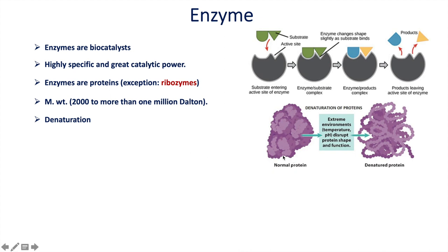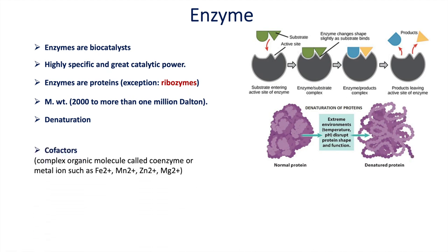This process of structural change is called denaturation. Normal protein, when exposed to extreme conditions like high temperature or abnormal pH — for example, enzymes work best at pH 7.4, but under very extreme acidic or very extreme alkaline pH — the protein's nature changes and it becomes a denatured protein.